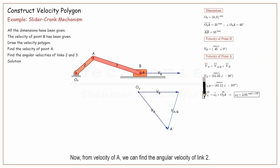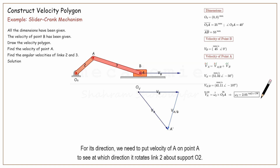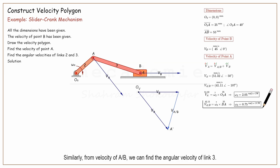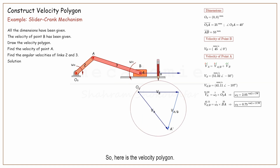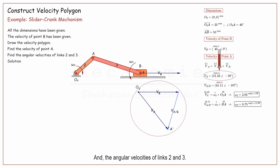Now, from the velocity of A, we can find the angular velocity of link 2. For its direction, we need to put the velocity of A on point A to see at which direction it rotates link 2 about support O2. Similarly, from the velocity of A with respect to B, we can find the angular velocity of link 3. For the direction, we need to put the velocity of A with respect to B on point A to see at which direction it rotates link 3 about the reference point B. So here is the velocity polygon, the velocity of point A, and the angular velocities of links 2 and 3.